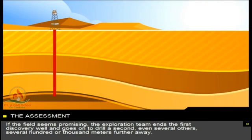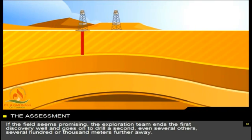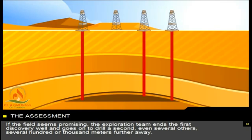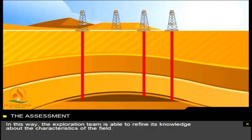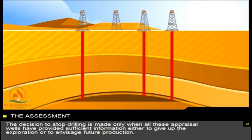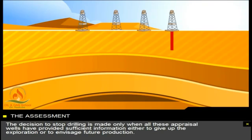If the field seems promising, the exploration team ends the first discovery well and goes on to drill a second, even several others, several hundred or thousand meters further away. In this way, the exploration team is able to refine its knowledge about the characteristics of the field. The decision to stop drilling is made only when all these appraisal wells have provided sufficient information either to give up the exploration or to envisage future production.